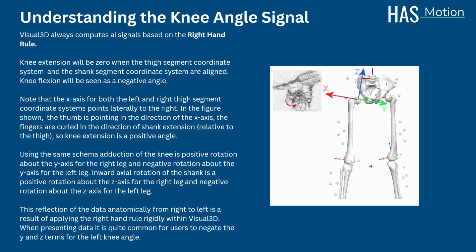Using the same schema, adduction of the knee is a positive rotation about the Y axis for the right leg and negative rotation about the Y axis for the left leg. Inward axial rotation of the shank is a positive rotation about the Z axis for the right leg and a negative rotation about the Z axis for the left leg. This reflection of the data anatomically from right to left is a result of applying the right hand rule rigidly within Visual 3D. When presenting data, it is quite common for users to negate the Y and Z terms for the left knee angle.